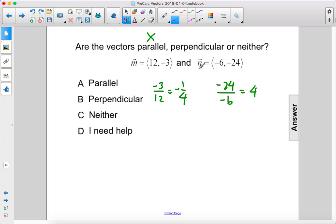We'll take the dot product of m and n. So that would be 12 times negative 6, which is negative 72, plus negative 3 times negative 24, which is positive 72.